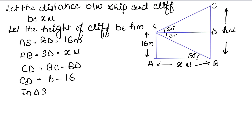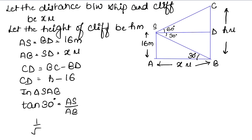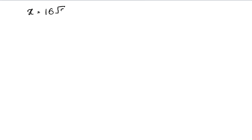In triangle SAB, tan 30 degrees equals perpendicular over base, that is SA over AB. The value of tan 30° is 1/√3. SA is 16 and AB is x. Cross multiplying, x equals 16√3 meters.